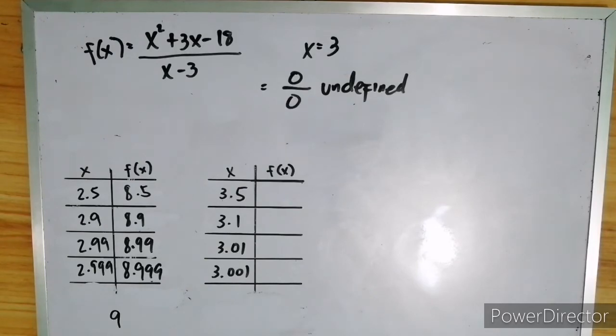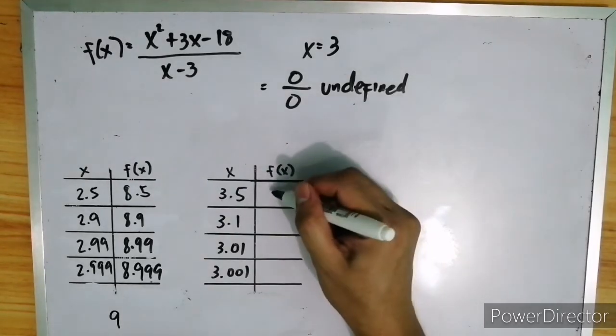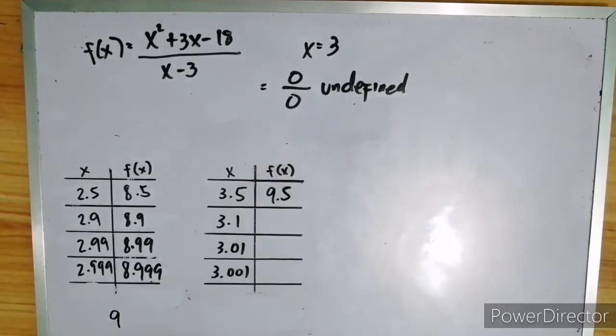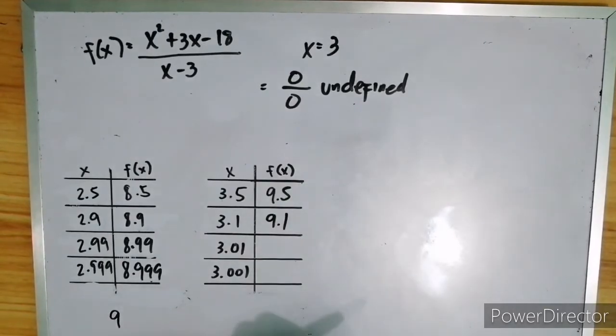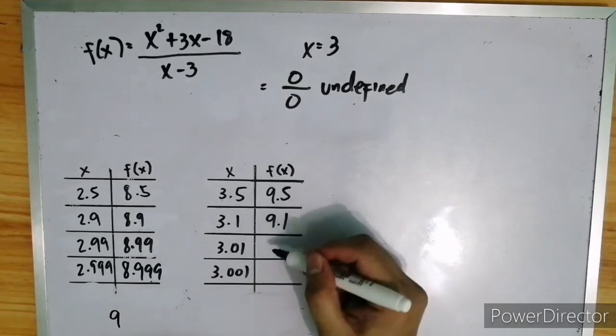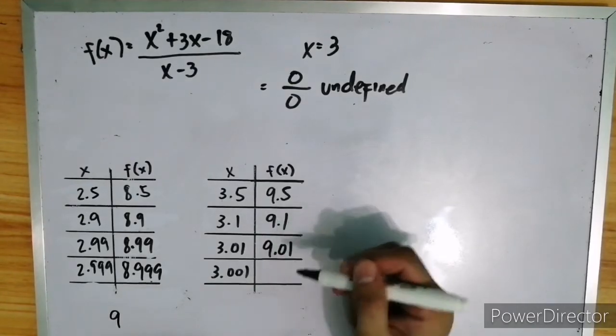So, if we have 3.5, the value of f of x is 9.5. Right? If we have 3.1, that is 9.1. If we have 3.01, we have f of x equals 9.01.